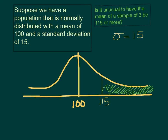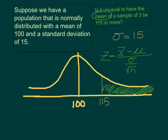In order to calculate that probability, I need to know my z-score for that value of 115. Now since I'm calculating the mean, I need to use the appropriate z-score formula, which in this case is z equals the sample mean x-bar minus the population mean mu, divided by the standard deviation over the square root of n.